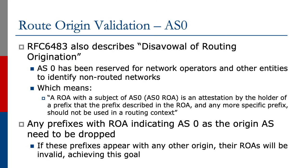For origin validation, we have a special case involving AS0, described in RFC 6483. It's known as disavowal of routing origination. AS0 has been reserved for network operators and other entities to identify non-routed networks. A ROAR with a subject of AS0 is an attestation by the holder of a prefix that the prefix described in the ROAR, and any more specific, should not be used in a routing context.